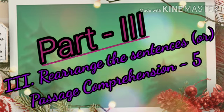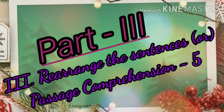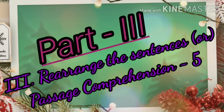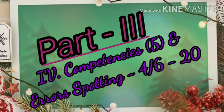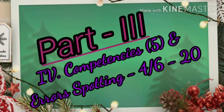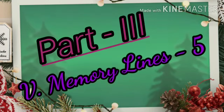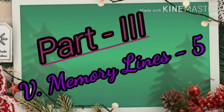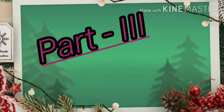Section 3: Supplementary part. Either-or choice will be given — rearrange the sentence or passage comprehension. 5 marks. Section 4: From competencies, 5 questions will be asked, plus error spotting, making 6 questions total. 6 out of 4 to be written, 20 marks. Section 5: Memory lines. We have two memory poems for this exam; any one poem will be asked, 5 marks. So Part 3 totals 50 marks.